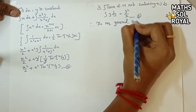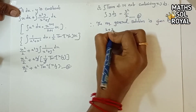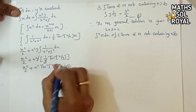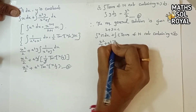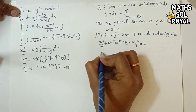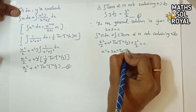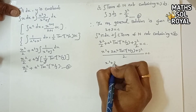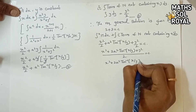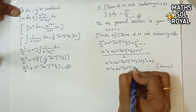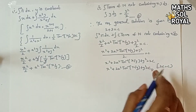Therefore, the required general solution is given by equation 2 + equation 3 = c: x²/2 + a² tan⁻¹(x/y) + y²/2 = c. Taking LCM of 2: (x² + 2a² tan⁻¹(x/y) + y²)/2 = c. Moving 2 to the right side: x² + 2a² tan⁻¹(x/y) + y² = 2c. Writing 2c as c: x² + 2a² tan⁻¹(x/y) + y² = c. This is the required general solution.